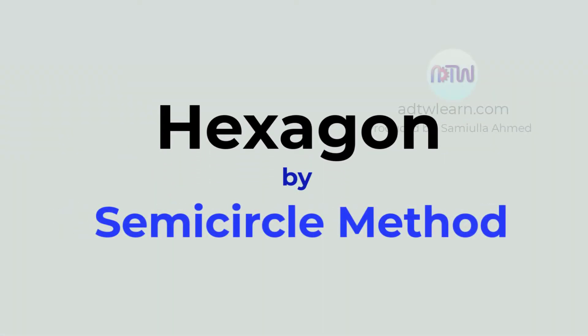In this video, we will learn how to draw a hexagon by the semicircle method. Suppose we want to draw a hexagon of length L. Draw a line of length L and label the endpoints of the line as A and B.